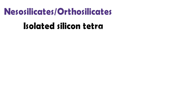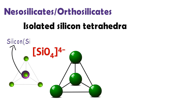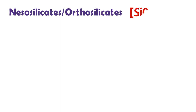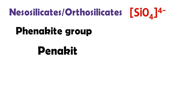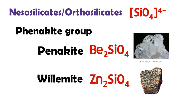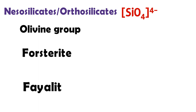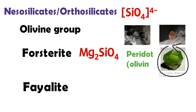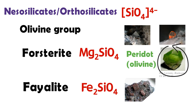Nesosilicate have isolated silicon tetrahedra that are connected only by interstitial cations. Nesosilicate can be divided into several groups. In the phenakite group, there are phenakite and willemite. The olivine group of nesosilicate includes forsterite and fayalite. Peridot is gem-quality olivine, a silicate mineral as the magnesium-rich variety of olivine, forsterite.